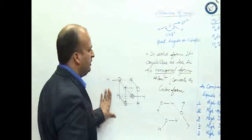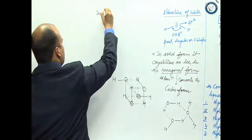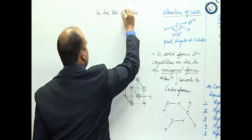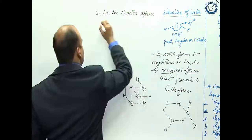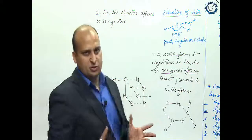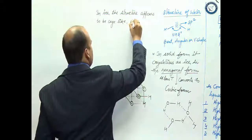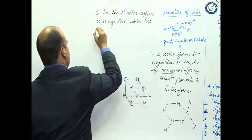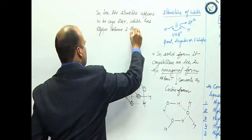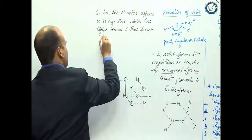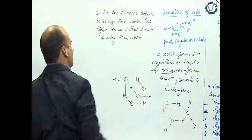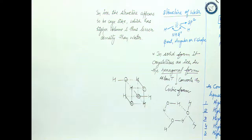In ice, the structure appears to be cage-like, which has higher volume and thus lesser density than water.